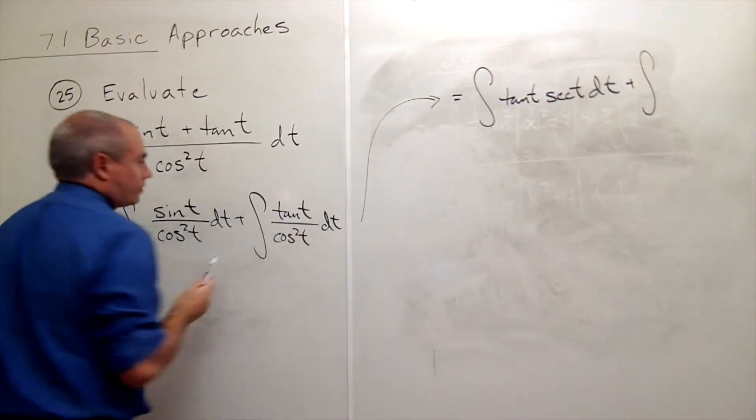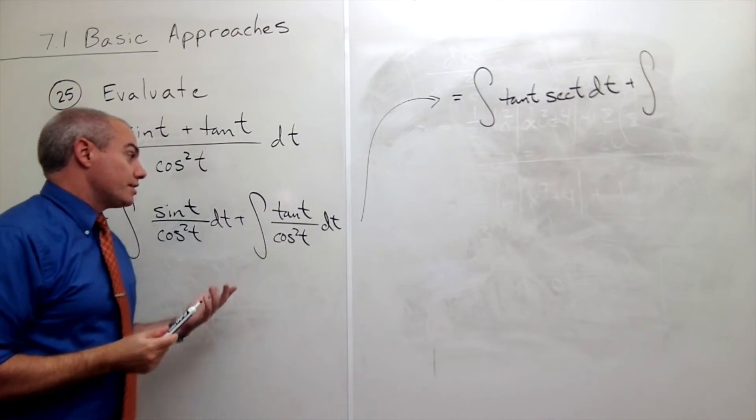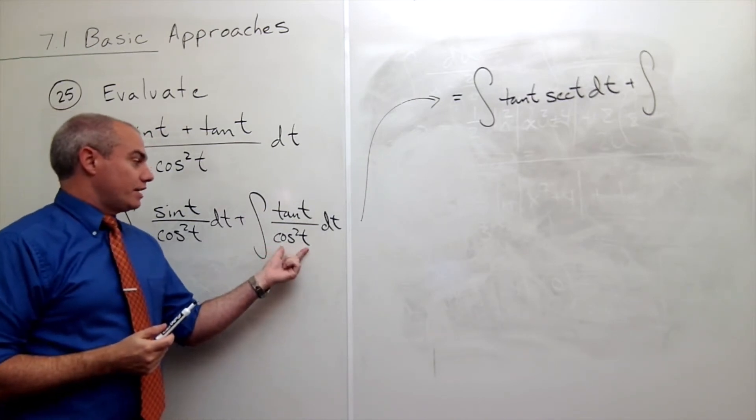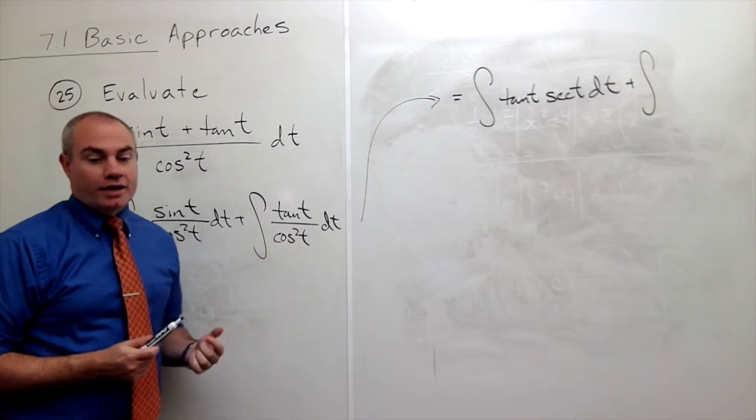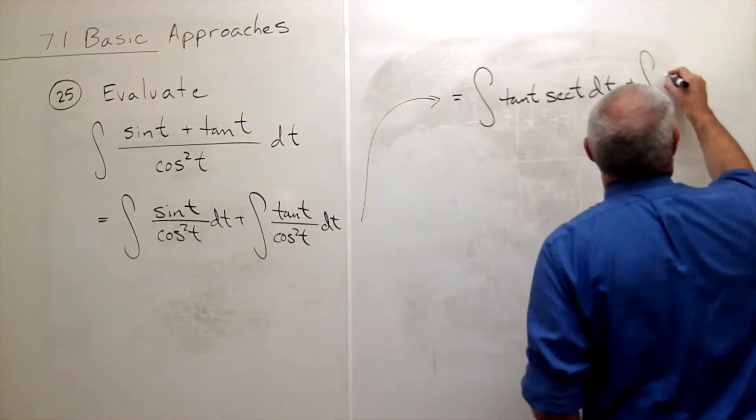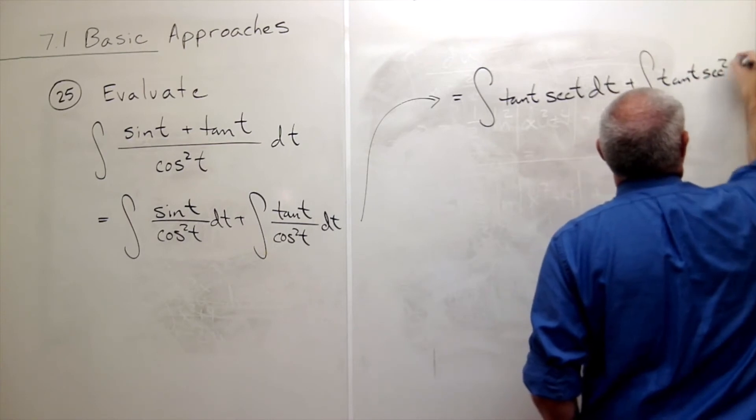Let's see what we've got here. Tangent t of course is tangent t. Cosine squared t on the bottom gives secant squared t. So I could rewrite this as tangent t secant squared t dt.